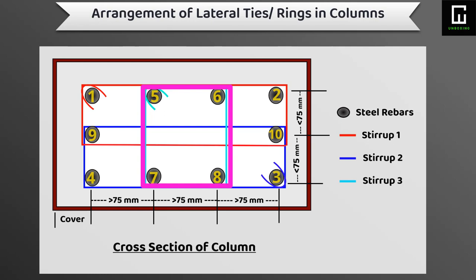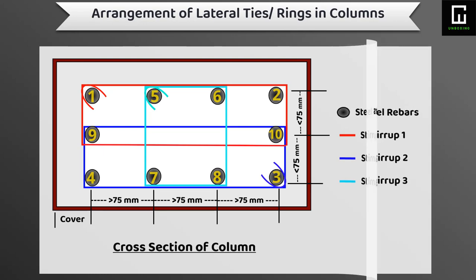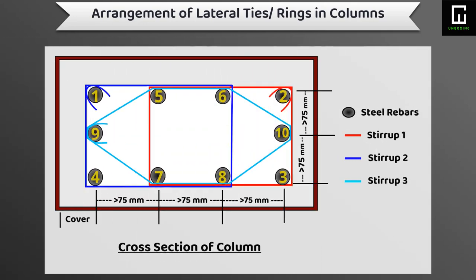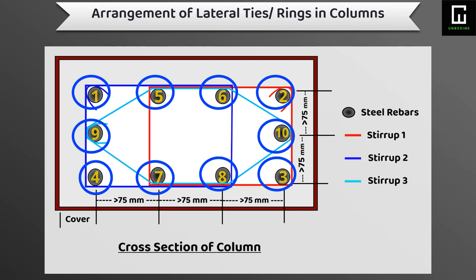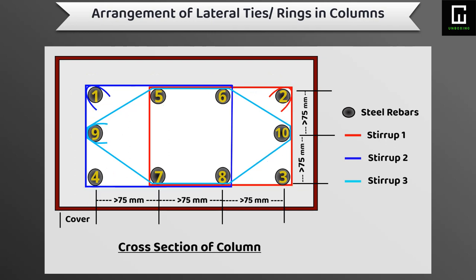This is the main concern regarding the arrangement of stirrups for that type of column. Coming to the last and eighth type of column, the column size is more than 225 mm and 150 mm width-wise, also having ten numbers of longitudinal bars. In this type of column, we can provide two regular size stirrups and one hexagonal type of stirrup, as clearly shown in the picture.